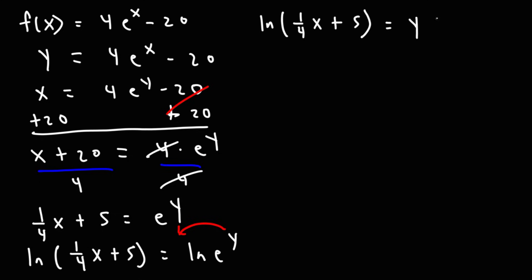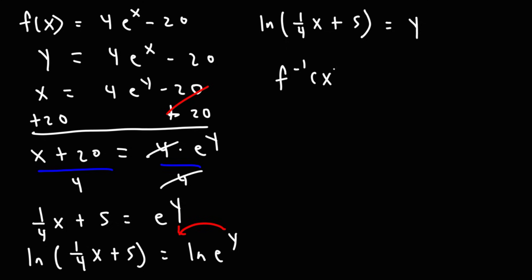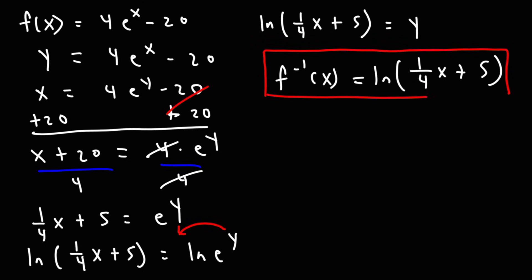This is going to be y times ln(e). Now the natural log of e is 1, so 1 times y is just y — e basically disappears. Because we have y by itself and don't need a change of base formula, we can simply say the inverse function is the natural log of (1 over 4 x plus 5). As you can see, the inverse of an exponential function with base e gives us the natural log function.